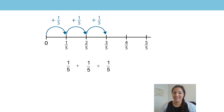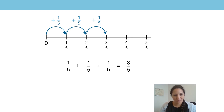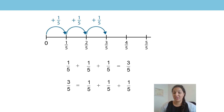One fifth add one fifth add one fifth equals three fifths. There is another way you can write this equation: three fifths equals one fifth add one fifth add one fifth.